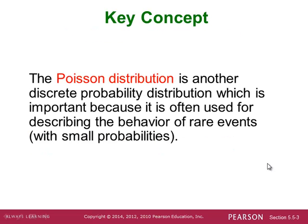So we're going to do just an easy overview of it without going into a whole lot of details. We'll show you how it works, how to calculate some probabilities, I'll show you how to use your calculator to calculate those probabilities. So Poisson distribution is another discrete probability distribution which is important, because it's often used in describing the behavior of rare events, not events that happen a lot.